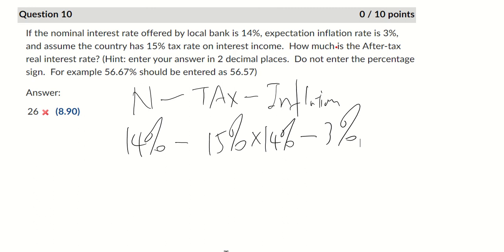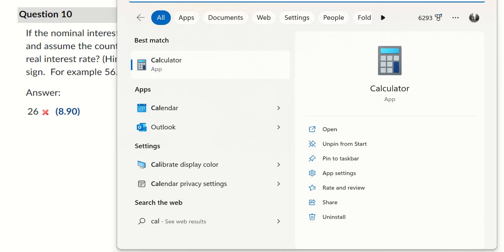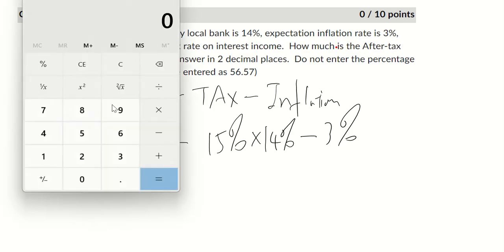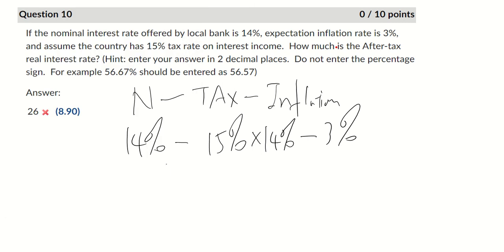So let's see how much this is. So we're going to do 0.15 times 0.14, and that's going to be 0.021, so 2.1%. So we have 14% minus 2.1%, and then minus 3%, and that equals to 8.9%.